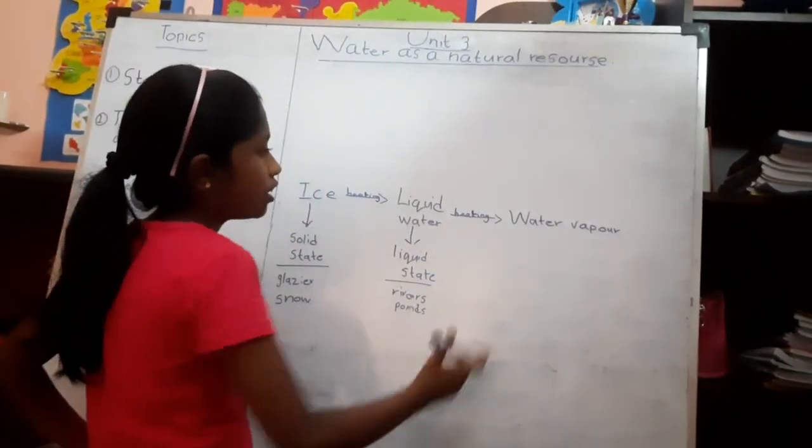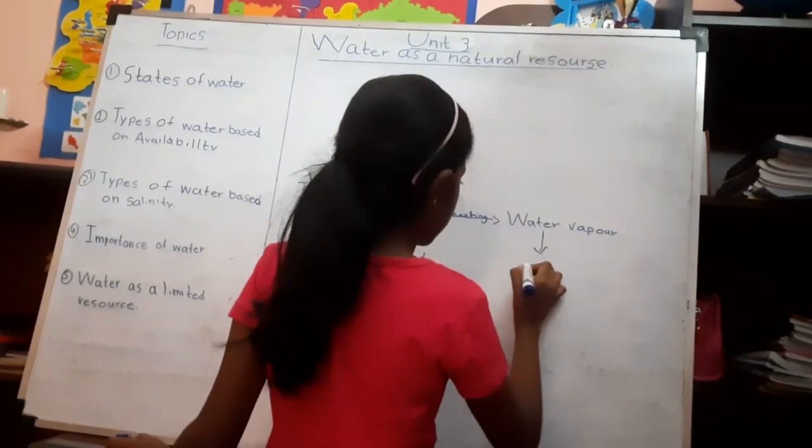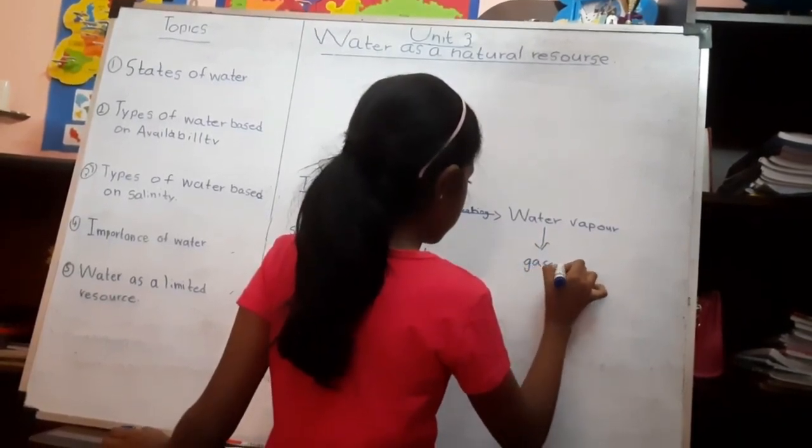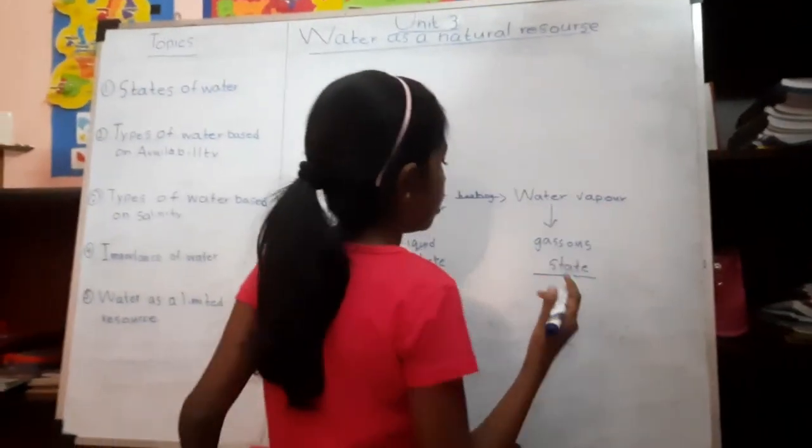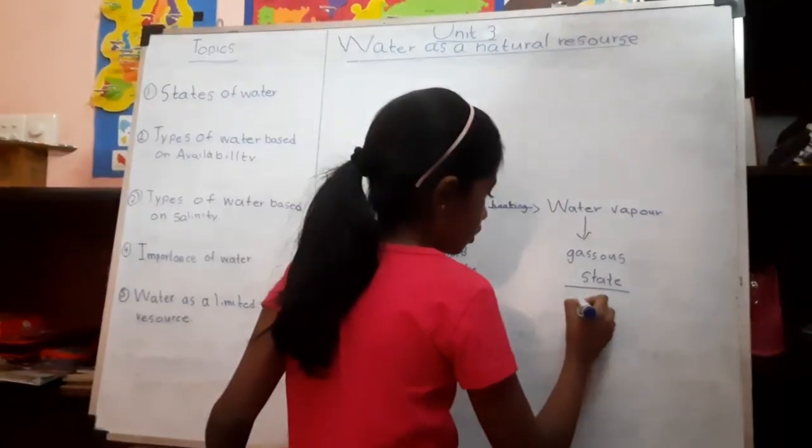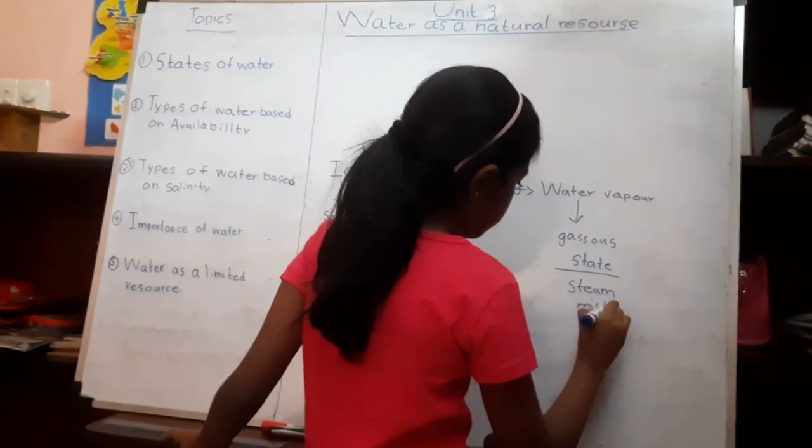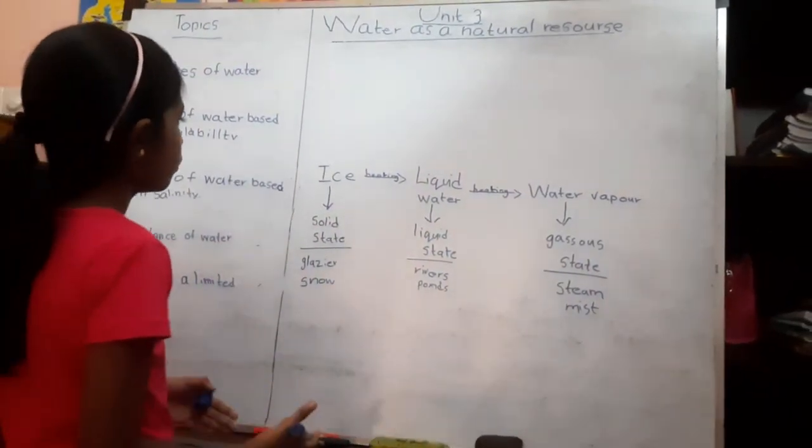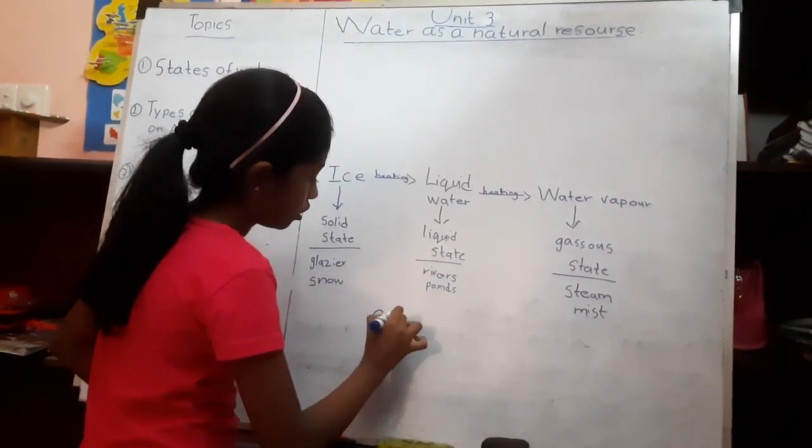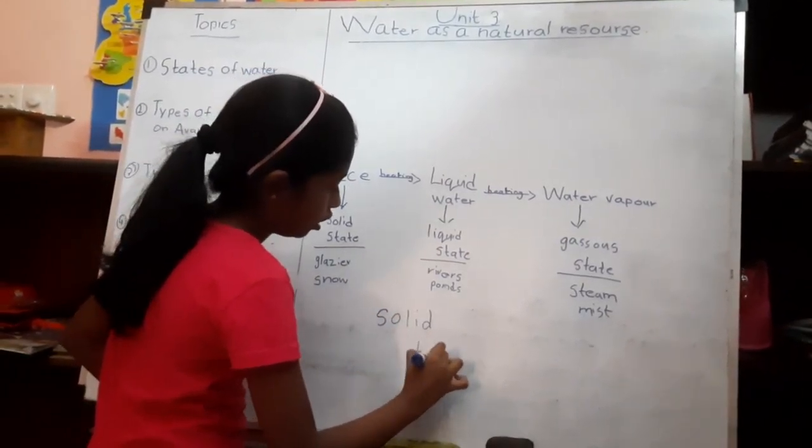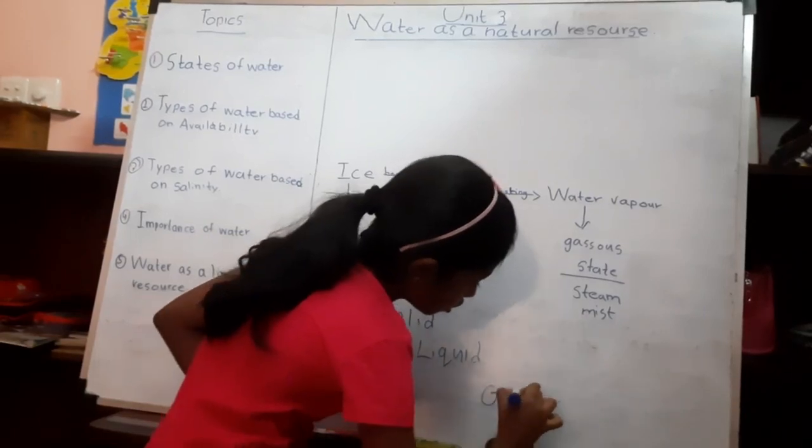So we can identify the water vapor as gaseous state of water. That is clear. The examples for gas state are steam, mist, like that. So we know there are three states of water. They are solid, liquid, and gases.